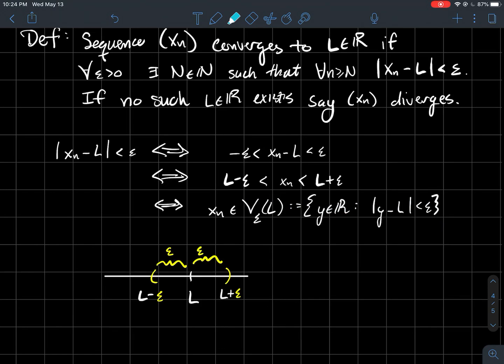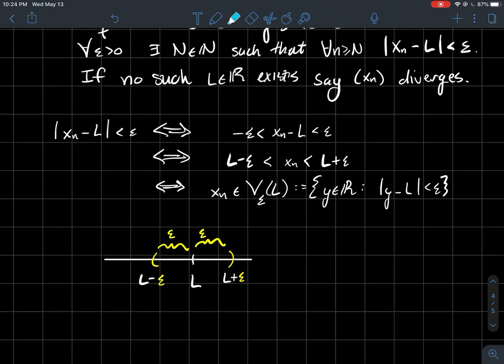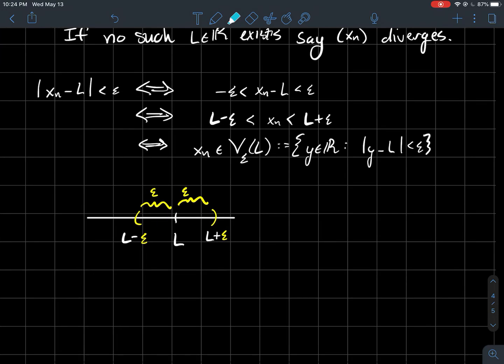Let me draw a one-dimensional picture of what's going on when a sequence converges to L. In the previous video, I drew a two-dimensional picture with graphs. Now I'm giving you the one-dimensional analog. If you've got an L, for any epsilon that I pick, I should be able to put this little window around L such that the following happens.